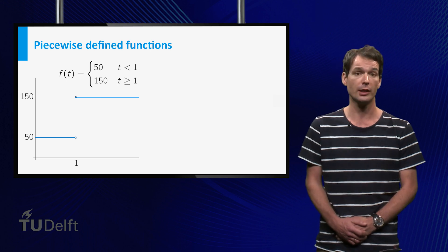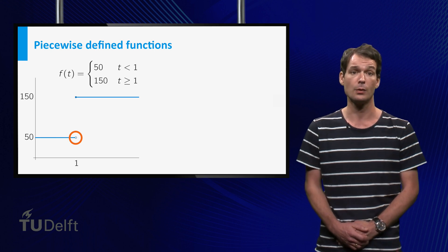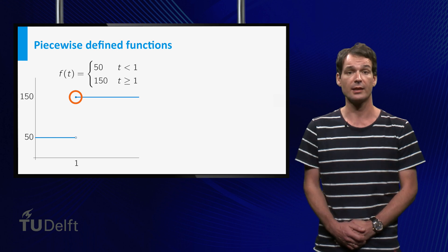The open dot in the graph indicates that the value of f at 1 is not 50, and the closed dot indicates that it is 150.